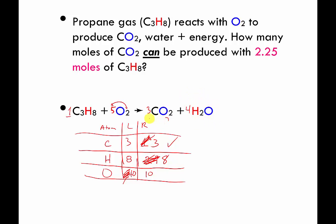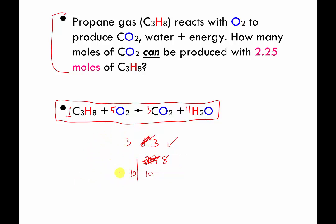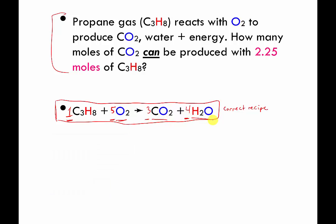That took a little while and was slightly more complex than previous examples, but we're good to go. Here is the balanced equation. Think of it as the correct recipe: one mole of C3H8 must be mixed with five moles of O2, which can produce three moles of CO2 and four moles of water.